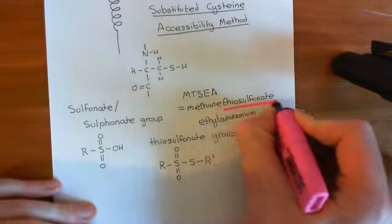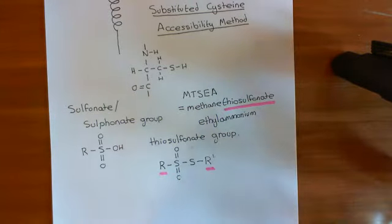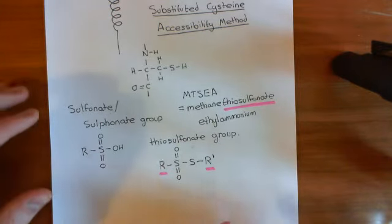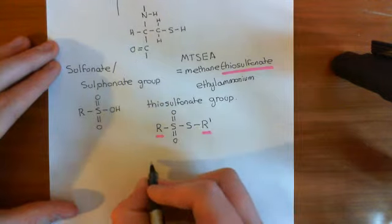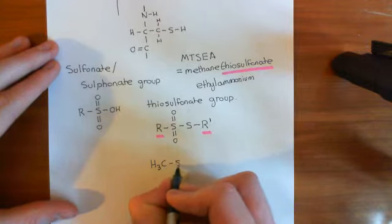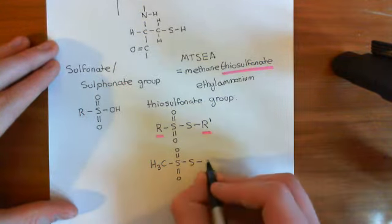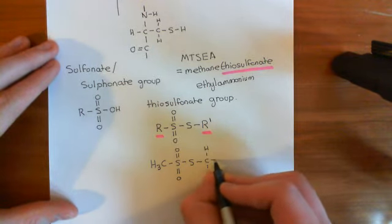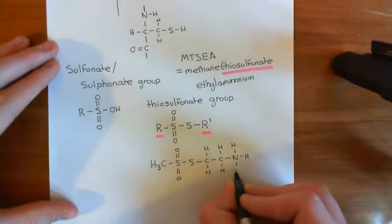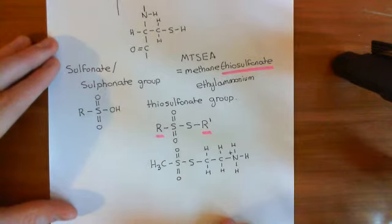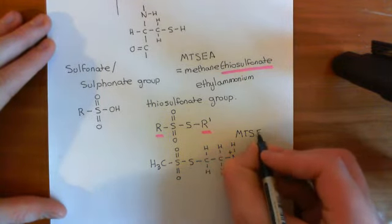The name tells us exactly what the two R groups should be: methane, thiosulfonate, and ethylammonium. So we have a methyl group — H3C — then a sulfur double-bonded to oxygen twice, then another sulfur, then the ethyl group (a two-carbon hydrocarbon), and then an ammonium group on the end, which is a nitrogen with four bonds carrying a positive charge. That is the complete structure of methanethiosulfonate ethylammonium, or MTSEA for short.